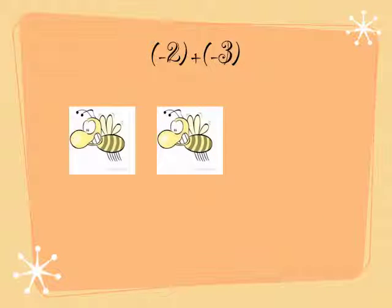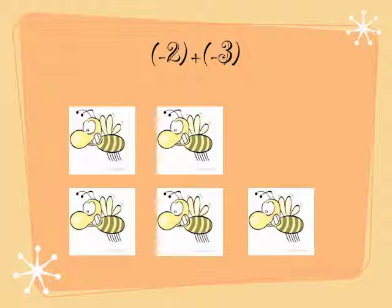Our first problem is negative 2 plus negative 3. So the negative 2 in the front represents 2 bees in the garden. Then 3 more bees arrive there. So altogether, there are 5 bees in the garden.